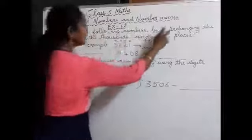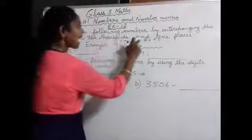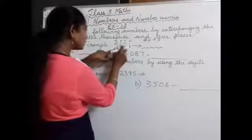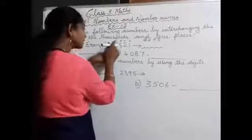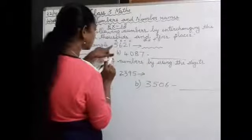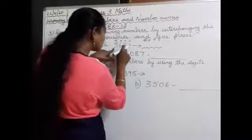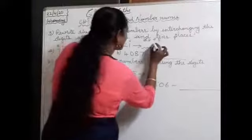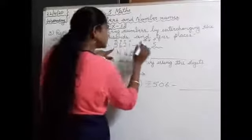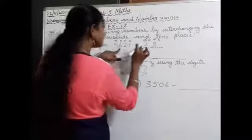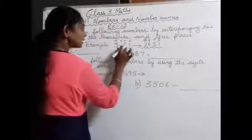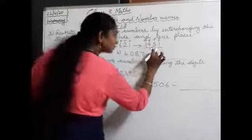Question 3: rewrite the following numbers by interchanging the digits at the thousands and tens place. Thousands and tens place numbers have to be interchanged. The 2 from tens place will go to thousands place and the 5 from thousands place will go to tens place. Hundreds and ones place numbers will be the same — 6 and 1. So 5621 will become 2651.